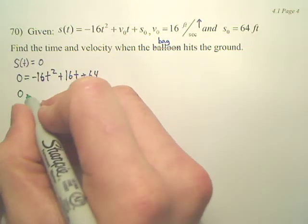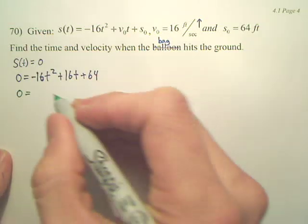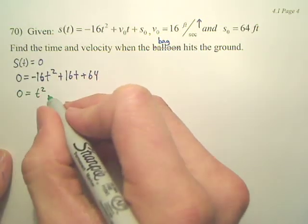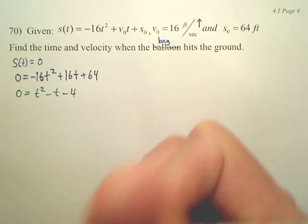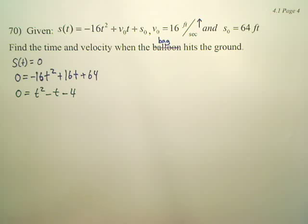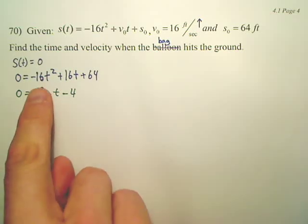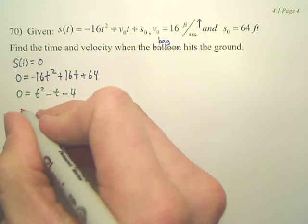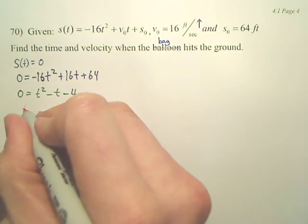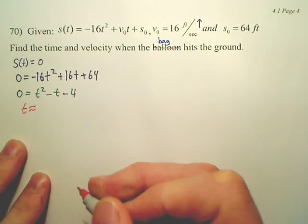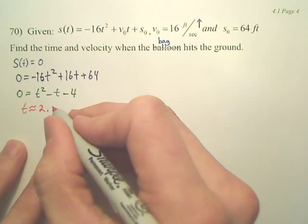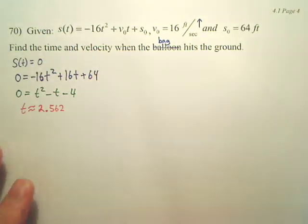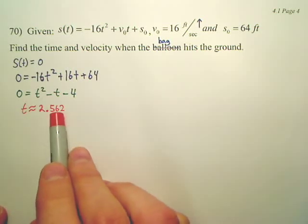It'd be a lot easier to divide everything out by negative 16. And you get t squared minus t minus 4. And you have to use quadratic formula. Do you want me just to tell you the answer? The answer is approximately, it has two answers, one of them is negative. Do we care about the negative? Unless you can time travel, you might not want to put a negative time.